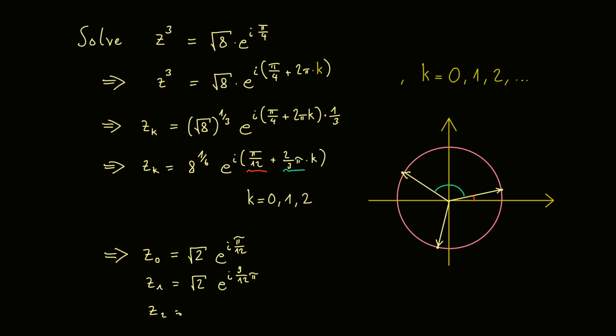Then the same holds for the third solution. Still the same absolute value, but now we have again to add 8 over 12 π, which means we have 17 over 12 π.